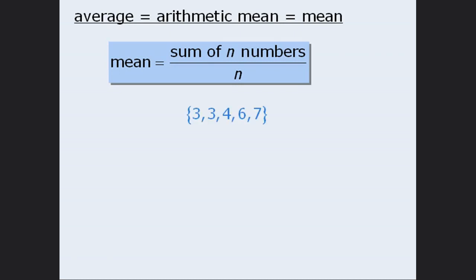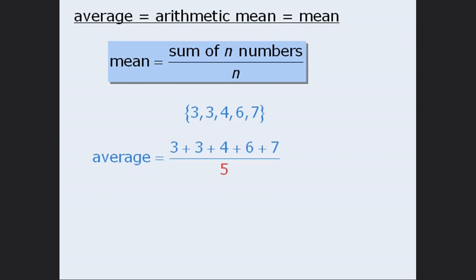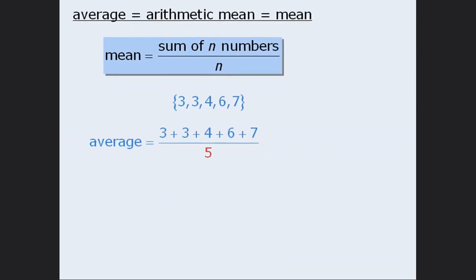For example, to calculate the average of these five numbers, we will find their sum and then divide by 5. When we simplify this, we see that the average or mean is 4.6.